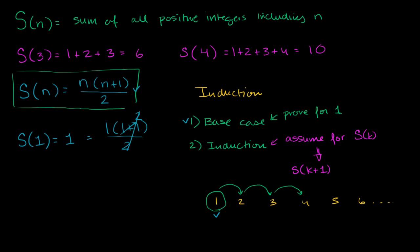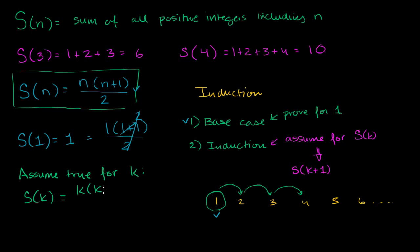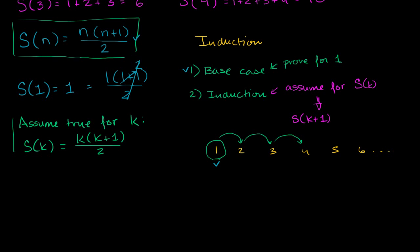Now what I want to do is assume that it works for some number k. I will assume it is true for some number k — that this function at k is going to be equal to k times k plus 1 over 2. I'm just assuming this is true. Now what I want to do is think about what happens when I try to find this function for k plus 1.